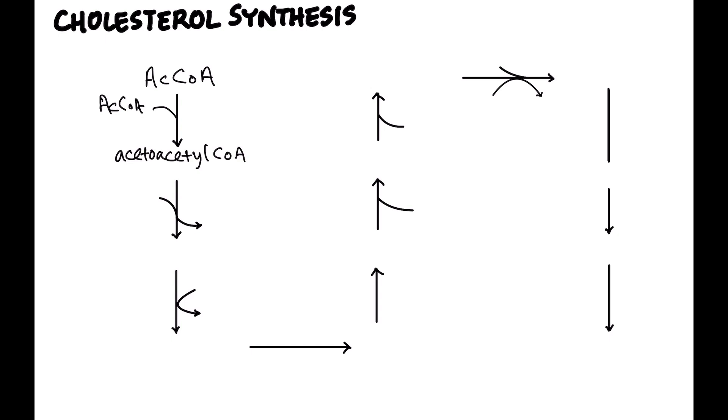And then this kind of happens again, so we add another acetyl-CoA. Of course, we're giving off CoA, and we did that last time as well. And what we get then is HMG-CoA. Now, the enzyme that does this is called HMG-CoA synthase, and this is different from the next enzyme, which is extremely important.